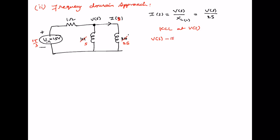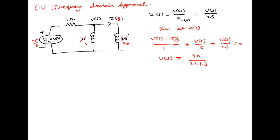KCL at V(S): V(S) minus 15 by S, all divided by 1 ohm, plus V(S) divided by S, plus V(S) divided by 2S, equals 0. Simplifying this equation, V(S) equals 30 divided by 2S plus 3.